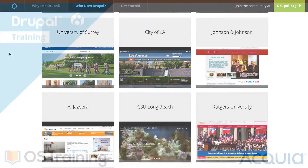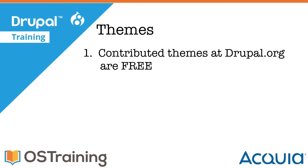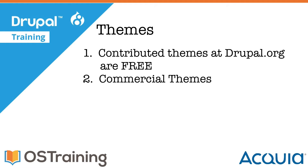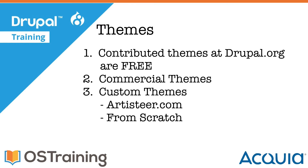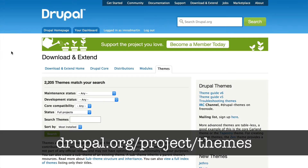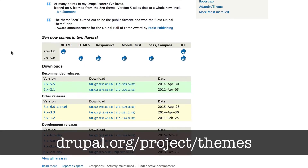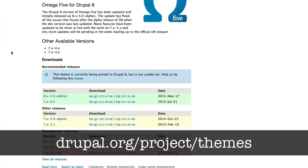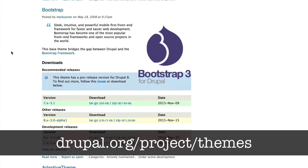Here are a couple of things to remember about themes. Number one: you can get themes from a few different places. There are free themes at Drupal.org — these are called contributed themes. You can purchase a theme from a number of different vendors on the market, or you can create your own with something like Artisteer from artisteer.com, or you can even build it from scratch. Contributed themes can be found at drupal.org/project/themes.